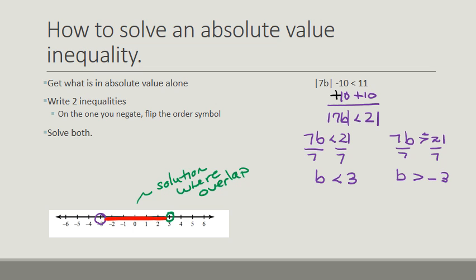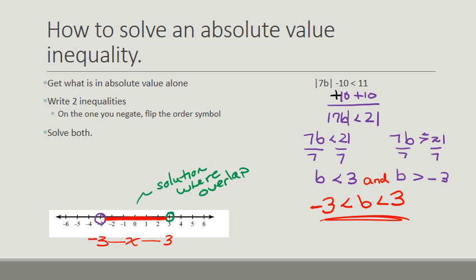Both things have to be true in order for this to be a solution. When we write our solution, we write it with "and" in between, or we can write it as one compound inequality with the smallest number first: negative 3 is less than b, which is less than 3. This is just like the graph — x is between negative 3 and 3. If you remember from geometry, with an "and" statement, both things had to be true.